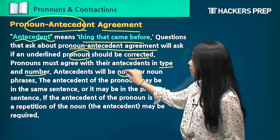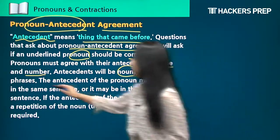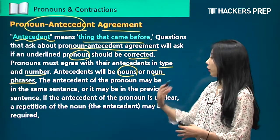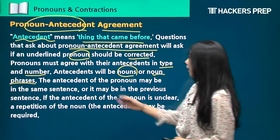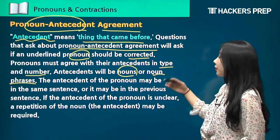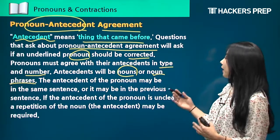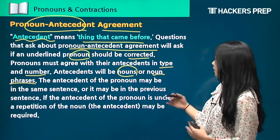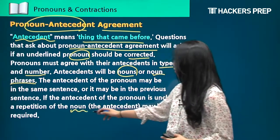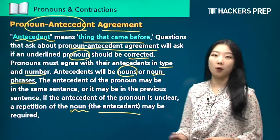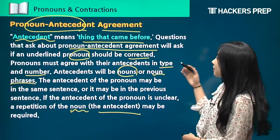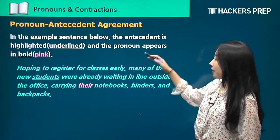Antecedents will be nouns or noun phrases. If they're long, they'll be noun phrases; if they're just one word, they'll be nouns. The antecedent of a pronoun may be in the same sentence or it may be in the previous sentence. If the antecedent of a pronoun is unclear, a repetition of the noun — which is the antecedent — may be required. We'll look at some examples.